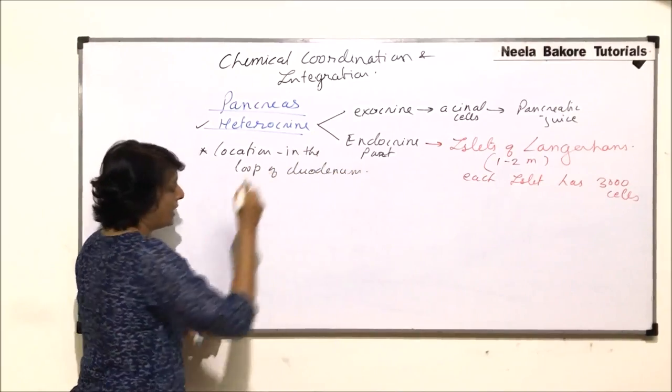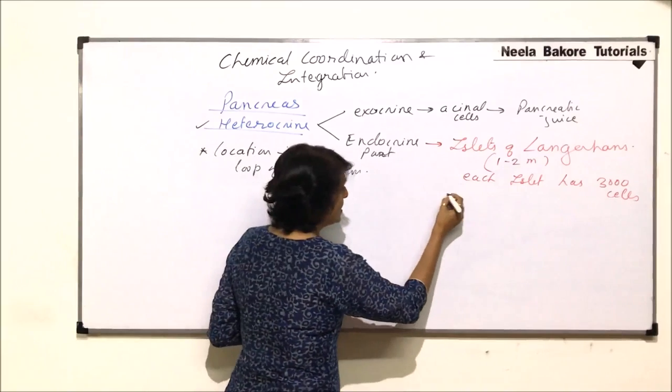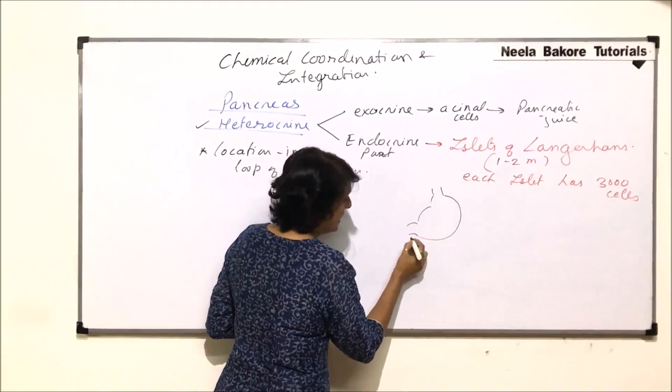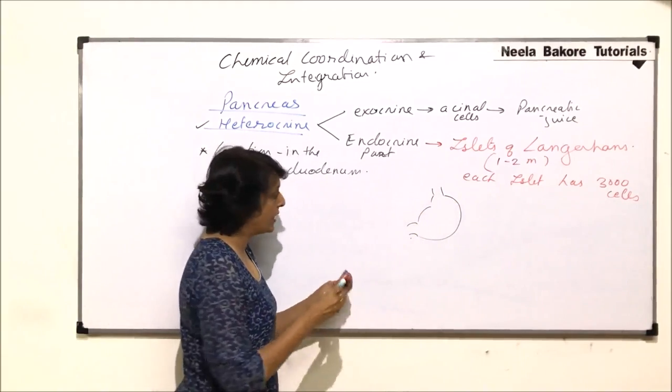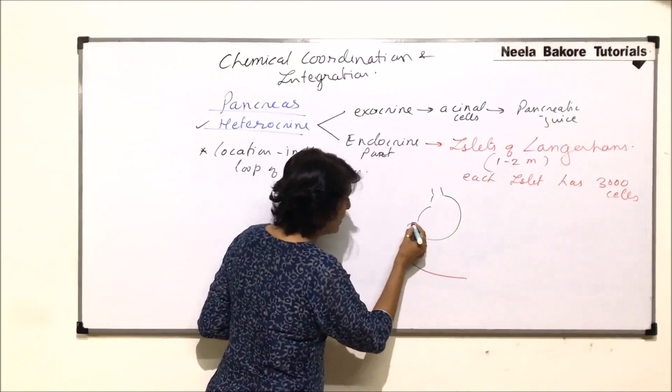If you are able to recall the structure of the digestive system, from the stomach part starts the small intestine. The first part of small intestine is duodenum.